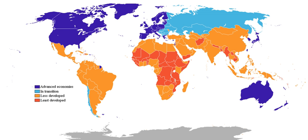Economic criteria have tended to dominate discussions. One such criterion is income per capita; countries with high gross domestic product per capita would thus be described as developed countries. Another economic criterion is industrialization; countries in which the tertiary and quaternary sectors of industry dominate would thus be described as developed. More recently, another measure, the Human Development Index, which combines an economic measure, national income, with other measures — indices for life expectancy and education — has become prominent.